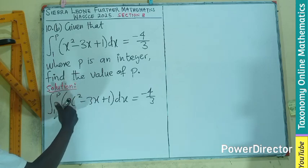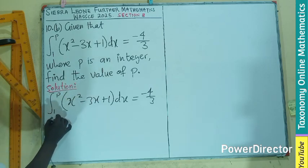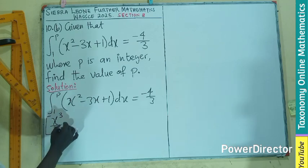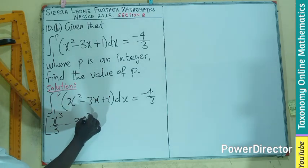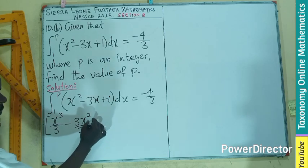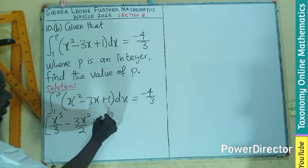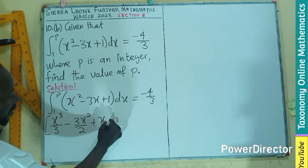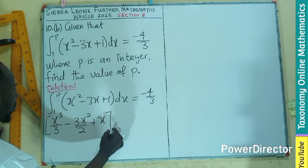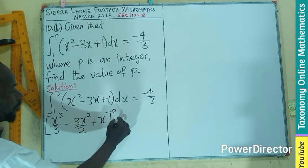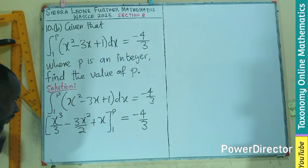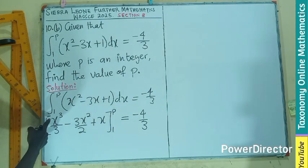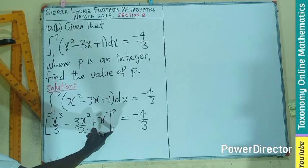For integral, we increase the power by 1, divided by the result, meaning x power 3 divided by 3. This is 3x power 2 divided by 2. This is power 0, so we have x power 1 divided by 1. This is bounded by 1 and p. The result will be minus 4 on 3.